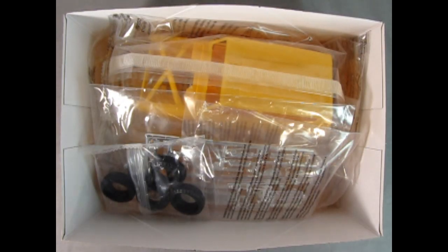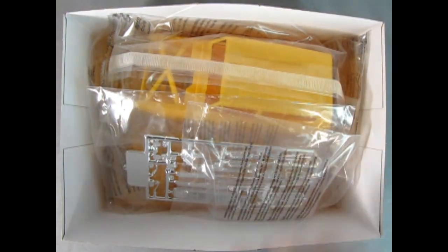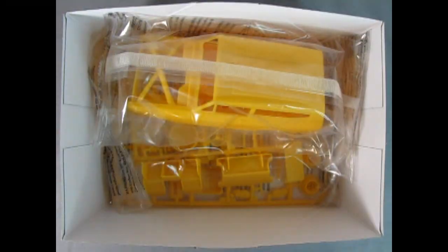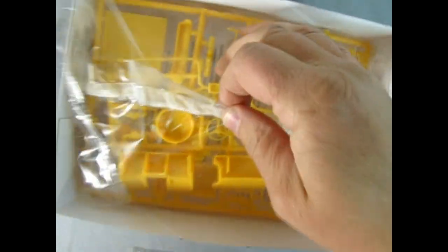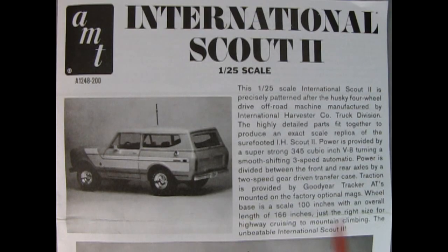Now let's take the lid off our International Scout 2 and see what we got. So right away we've got the instructions which we'll take a look at in a minute. We have the decal sheet. We also have our tires in the bag. We've got our glass here. We have the chrome, wonderful chrome, then we have the body, the interior and the undercarriage. And then we've got a nice bag full of yellow plastic components. Now unfortunately, this is molded in yellow so it's going to be a little bit of a trick to paint if you want white.